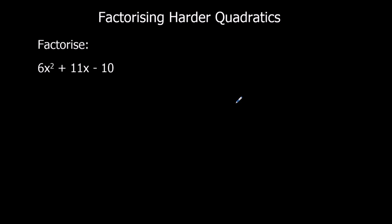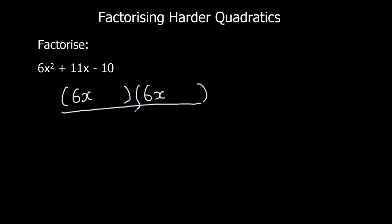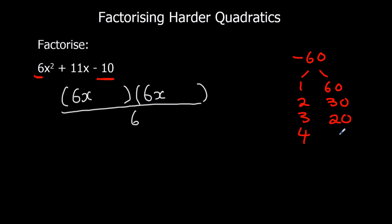Here we've got another question. The coefficient of x squared is 6, so we're going to write 6x in each bracket and put it all over 6. I'm going to take the first and last numbers and multiply them together: 6 times negative 10 is negative 60. The factors of 60: 1 and 60, 2 and 30, 3 and 20, 4 and 15, 5 and 12, 6 and 10. It's not in the 7, 8, or 9 times table, so those are all the options.